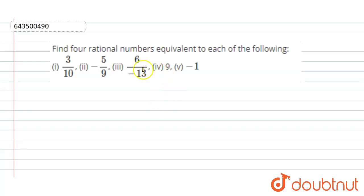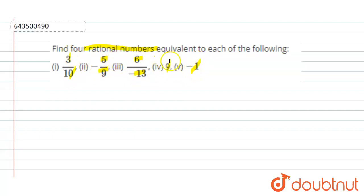Hello everyone. Our question is: find 4 rational numbers equivalent to each of the following. The numbers given to us are 3 by 10, minus 5 upon 9, 6 upon minus 13, 9, and minus 1. We need to find 4 equivalent rational numbers for each. Now let's start solving our questions.